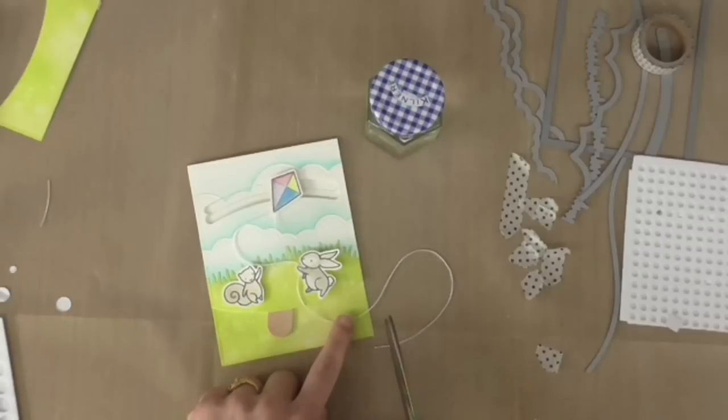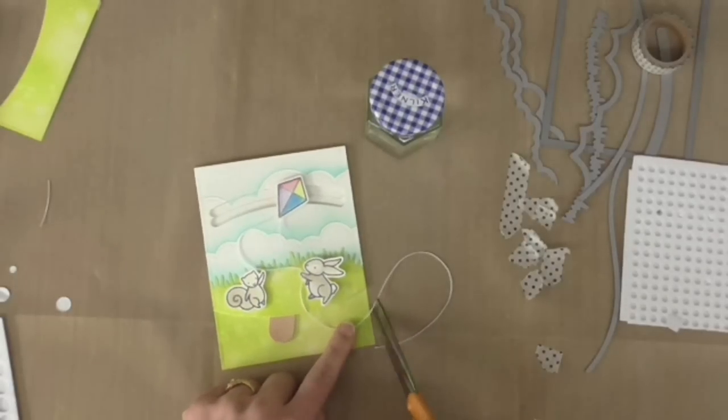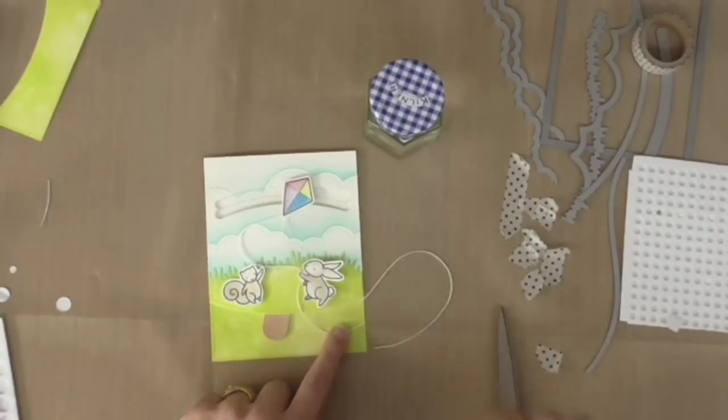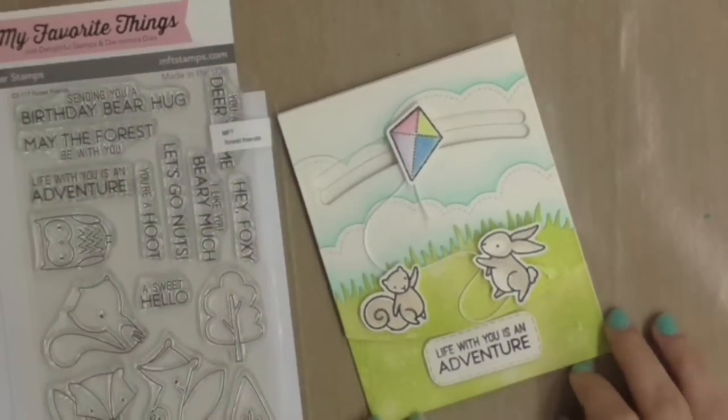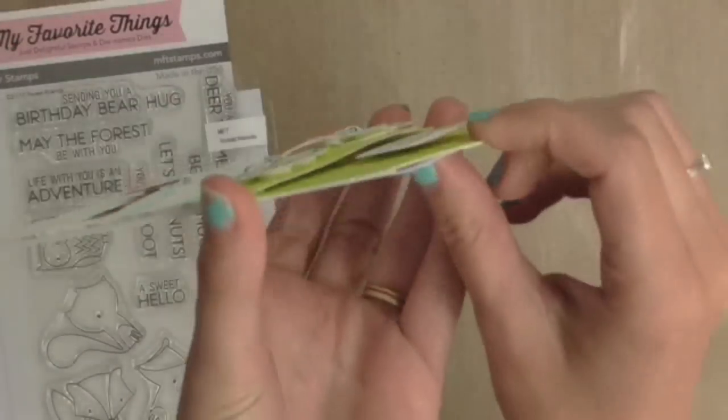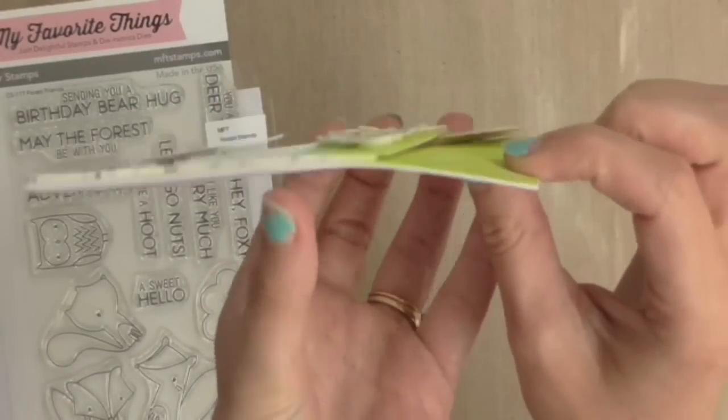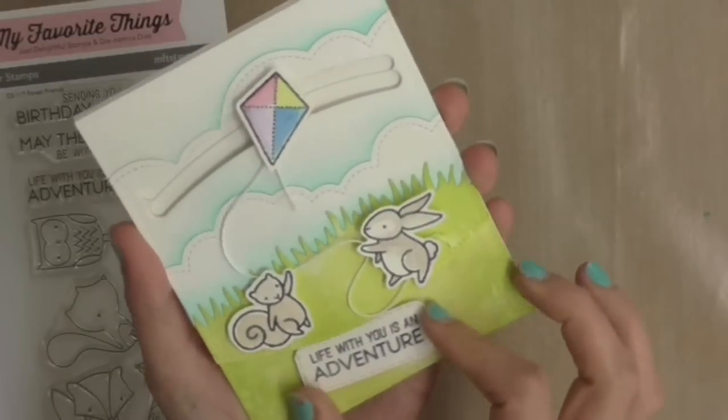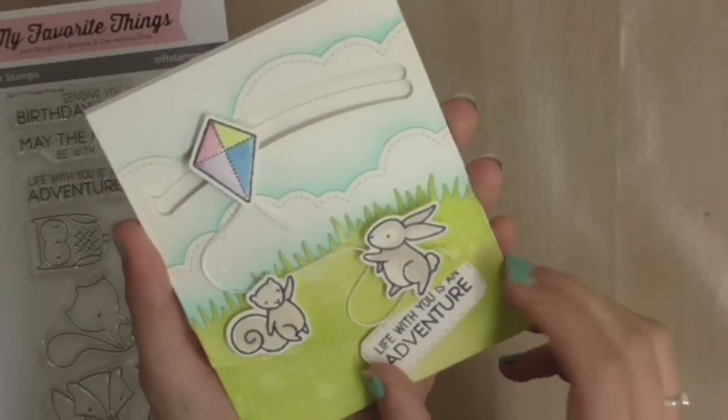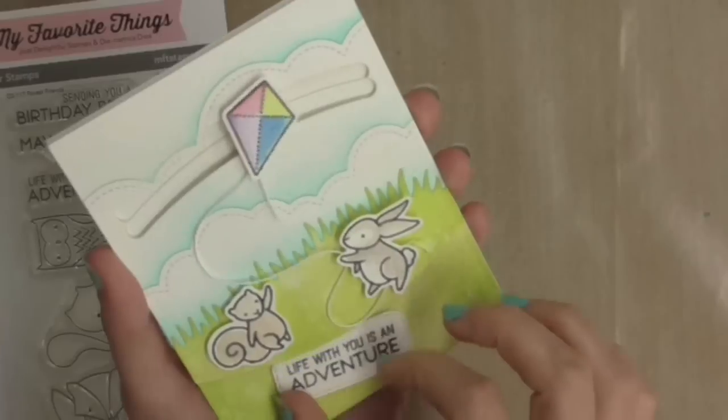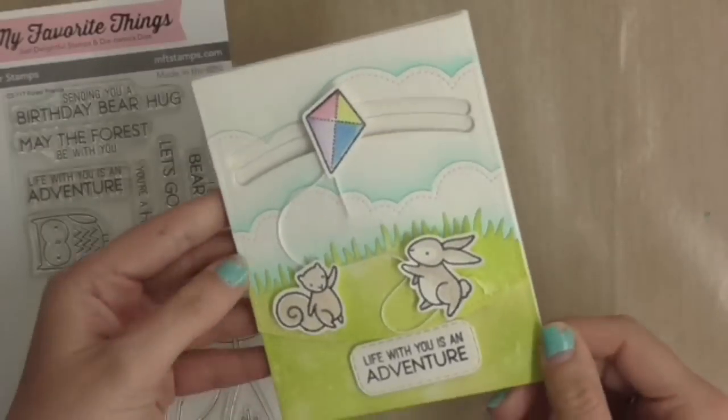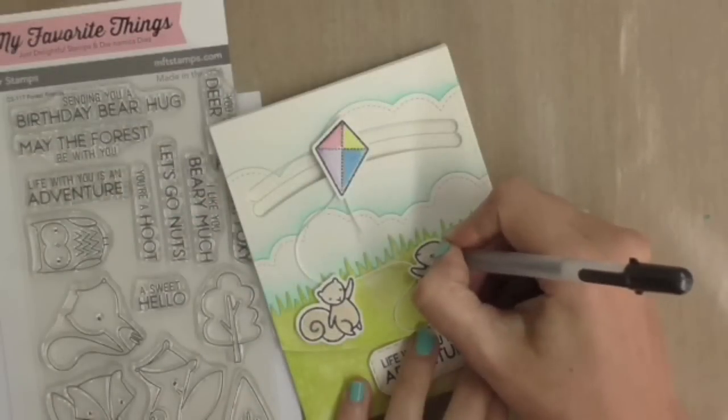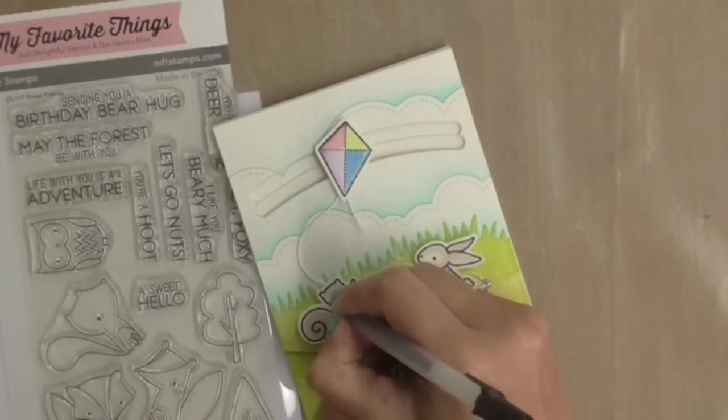Now unfortunately my camera gave out just about here but I did re-record a little bit extra so that you could see how I finished the card. I used this stamp set here which is called Forest Friends from My Favorite Things to stamp a greeting on here and then I cut it out using a die and I stuck it on top of the lollipop stick using some glossy accents. I wanted a really strong adhesive so now I can move that whole panel and watch my kite flying in the wind.